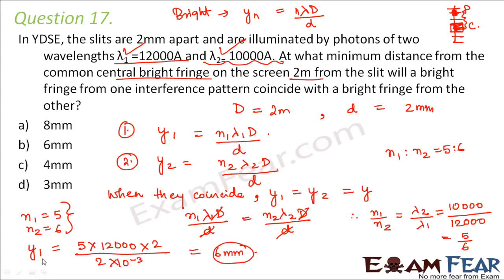That means 6 mm is the distance from the central fringe where the 5th bright fringe of lambda 1 coincides with the 6th bright fringe of lambda 2. This question was not very tough but a little tricky to understand, so it is very important to read the question carefully. The correct option is B.